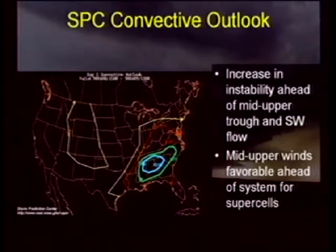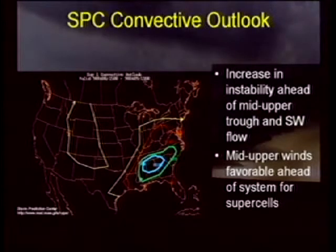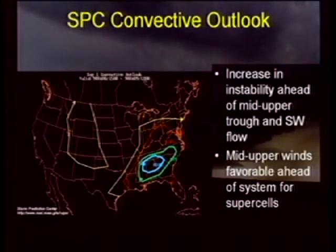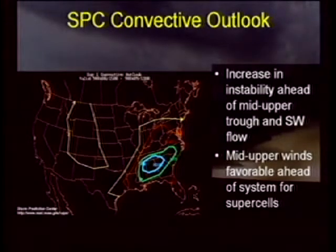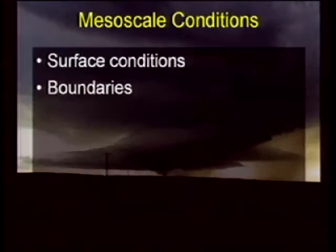A lot of other things were coming together: the cold front, the strong surface low, great moisture and warm air advection, 500 millibar vorticity peaking, two jets coming through for evacuation of mass. All things in the atmosphere were lining up in terms of instability and shear. With that, SPC went ahead and issued a high risk on this day for mainly northern Alabama, northern Georgia, extreme south-central Tennessee, and a little bit of eastern and northeastern Mississippi. You had increased instability ahead of the mid and upper level troughs, mid and upper level winds favorable ahead of the cold front for supercells — the shear was in place, instability was coming into place, and everything was lining up for a potentially significant event.